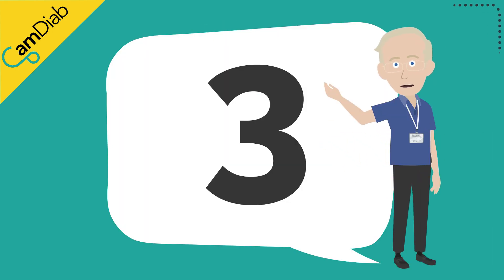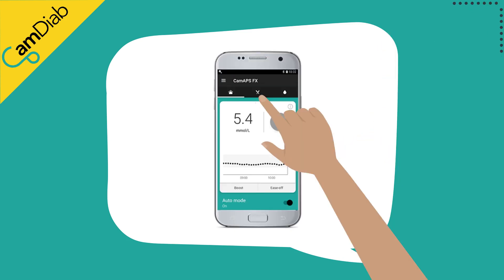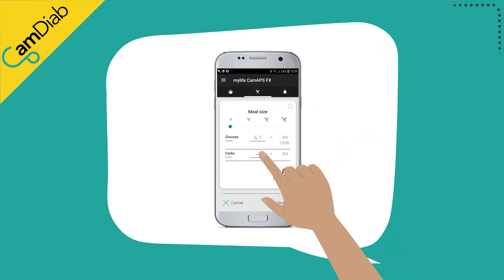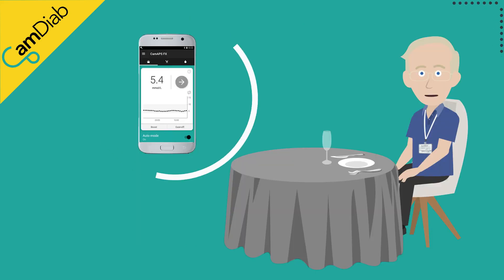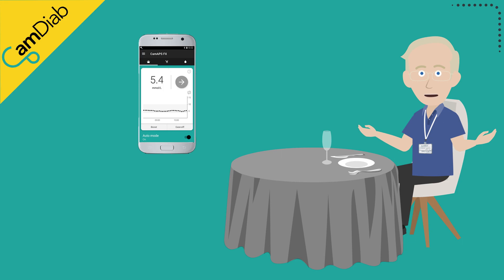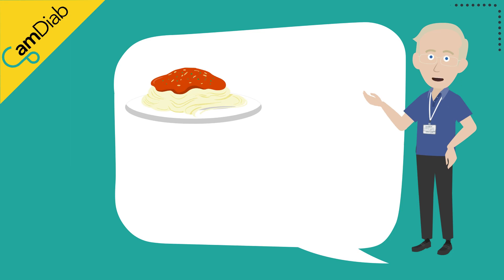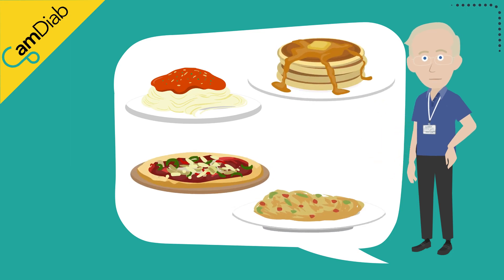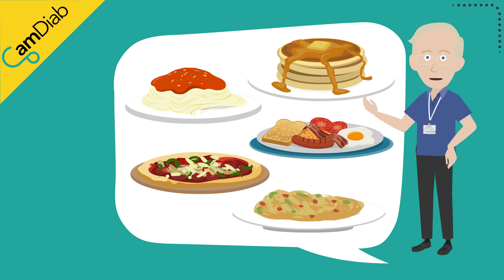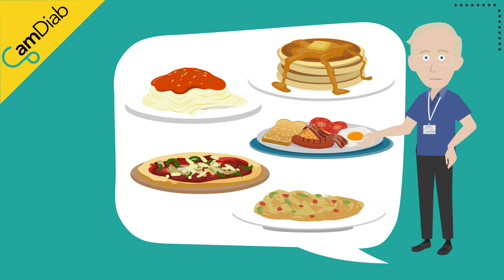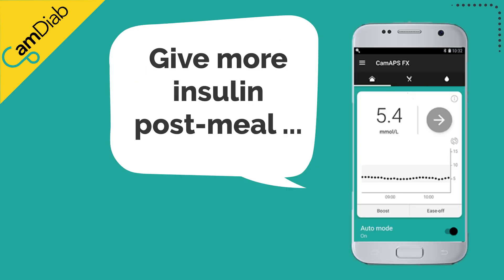The third way of learning is related to post-meal glucose levels. When someone uses the bolus calculator to enter their carbohydrates and deliver a meal bolus, CAM-APSFX reviews whether the insulin amount was appropriate by monitoring what happens to glucose levels after the meal. It then adjusts its assessment of glucose appearance for the carbohydrate content of that meal. On subsequent days, if someone is constantly giving too little insulin — for example when their insulin-to-carbohydrate ratio is too weak or they are underestimating carbohydrates — CAM-APSFX will start giving more insulin post-meal, knowing the person is under-bolusing and trying to compensate.